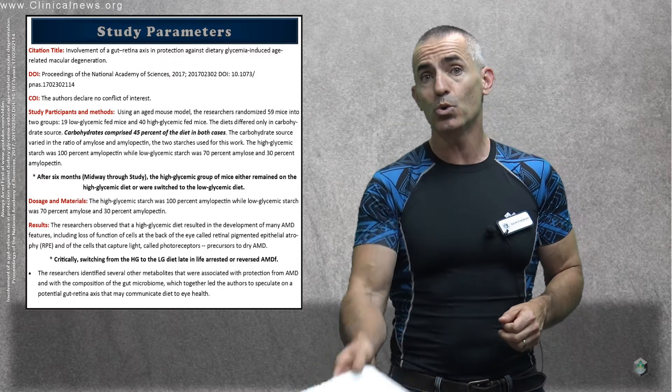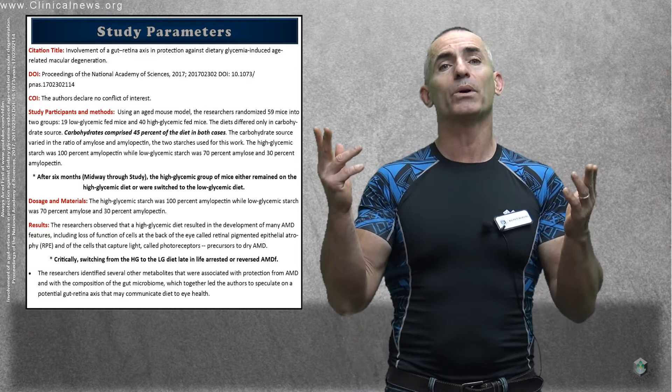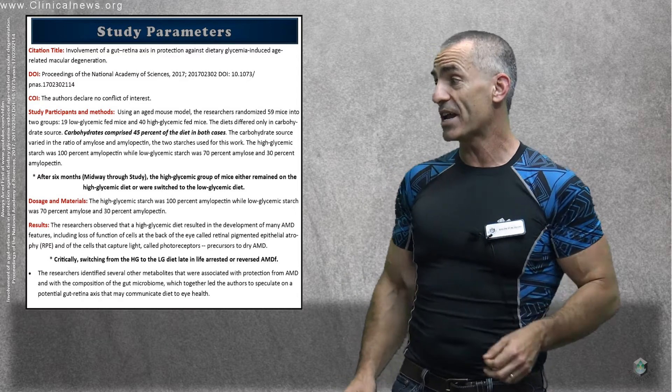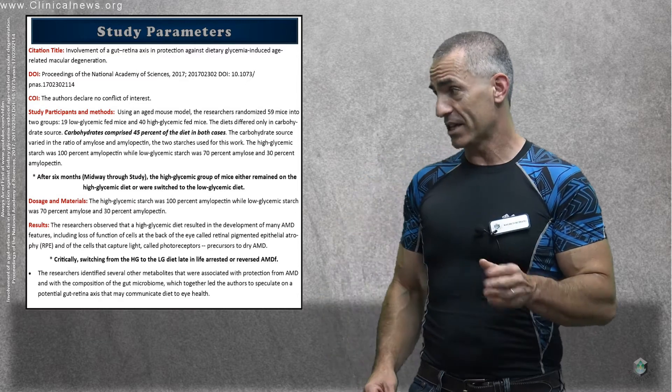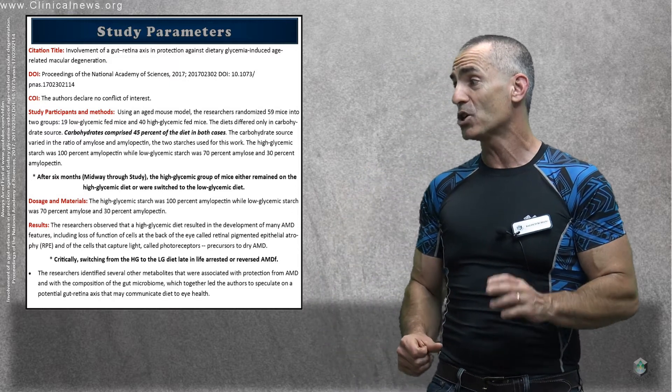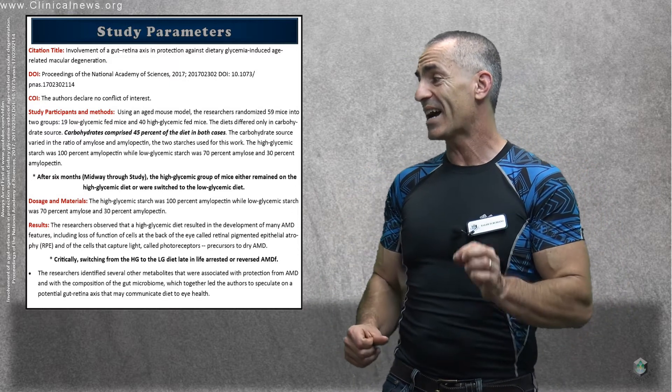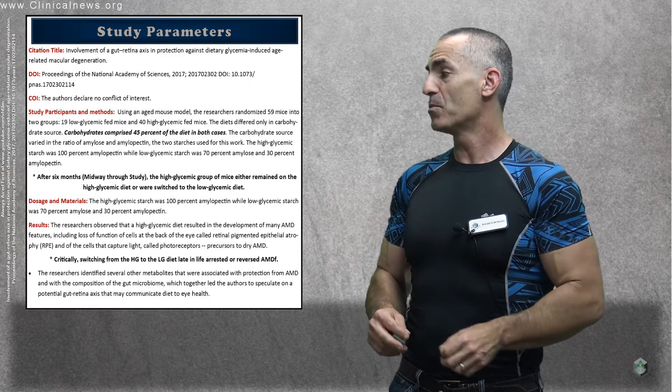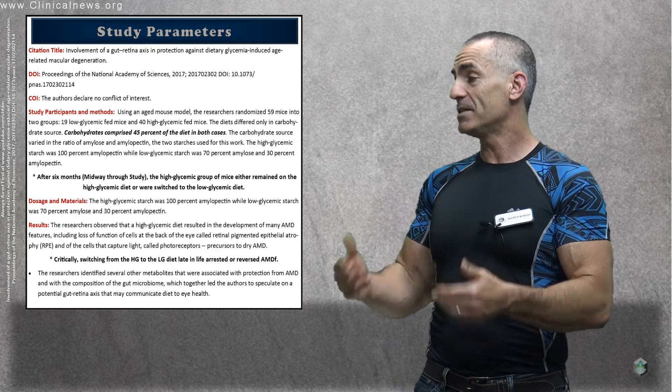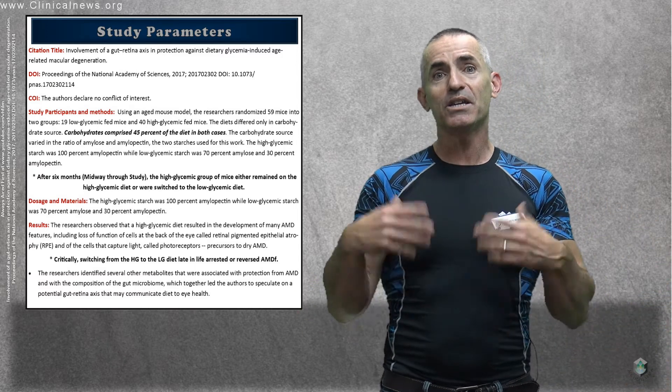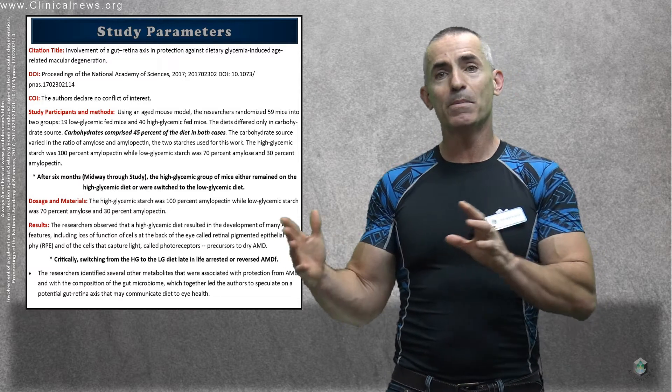But to conclude, and to quote directly from what the researchers said, because they said it best: Researchers state, we were genuinely surprised that the retinas from mice whose diets were switched from high to low-glycemic index diets midway through the study were indistinguishable from those fed a low-glycemic diet throughout the study.